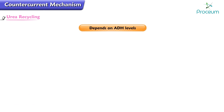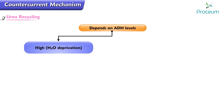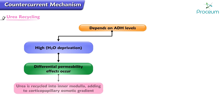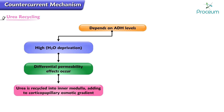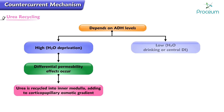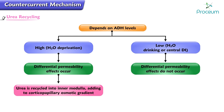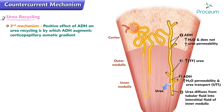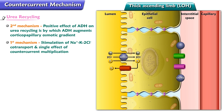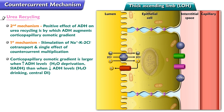Urea recycling also depends on ADH. When ADH levels are high, urea is recycled into the inner medulla, adding to the corticopapillary osmotic gradient. When ADH levels are low — as in water drinking or central diabetes insipidus — the differential permeability effects do not occur and urea is not recycled. The positive effect of ADH on urea recycling is the second mechanism by which ADH augments the corticopapillary osmotic gradient, the first being stimulation of the sodium-potassium-2-chloride cotransporter and the single effect of counter-current multiplication. Thus the corticopapillary osmotic gradient is larger when ADH levels are high.